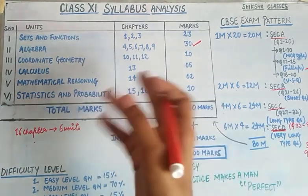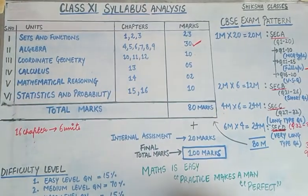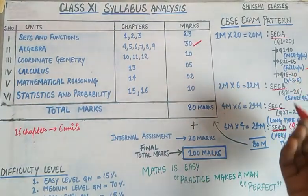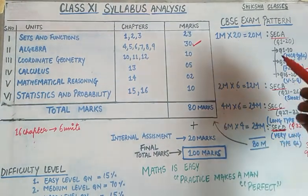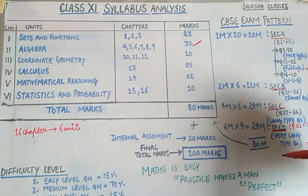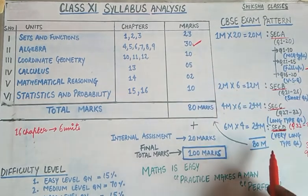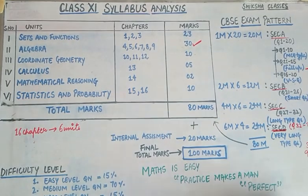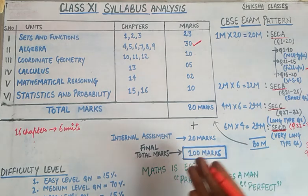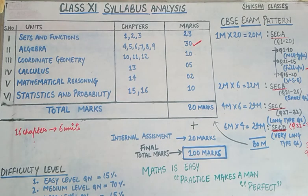So the total paper will be of 80 marks. 80 marks paper plus 20 marks internal assessment — as I mentioned unit-wise and section-wise — totaling 100 marks. This pattern and syllabus should now be clear to you.